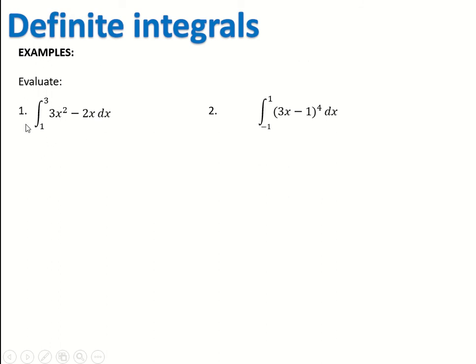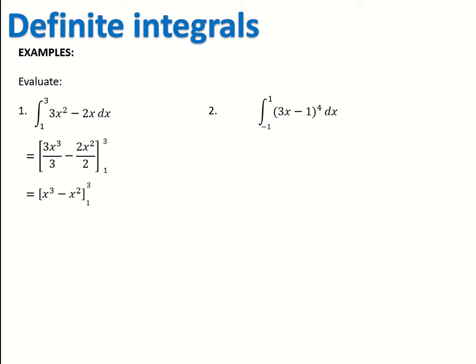The questions will look something like this. We're trying to find the integral of 3x squared minus 2x with respect to x, in the interval from 1 to 3. Work out the integral first, then substitute the numbers in. What most people do is write the integral in square brackets, then put the 1 and the 3 on the right-hand side at the top and bottom of those brackets. So 3x squared integrated becomes 3x cubed divided by 3, and 2x integrated becomes 2x squared divided by 2. Simplify these down — 3x cubed over 3 simplifies to x cubed, and 2x squared over 2 simplifies to x squared.